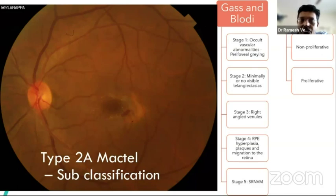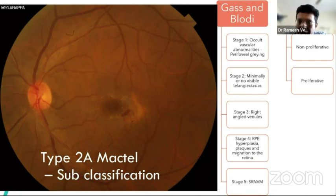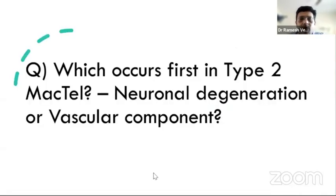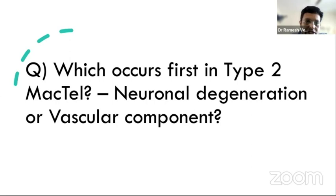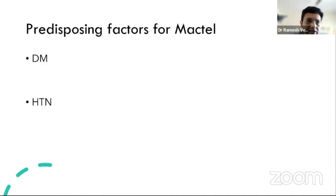Yannuzzi simplified this by noting that occlusive MacTel is very rare, proposing just type 1 and type 2. Gass and Blodi classified type 2 into five stages: stage 1 perifoveal graying with minimal visible telangiectatic vessels, stage 2, stage 3 right-angle venules, stage 4 pigment hyperplasia and plaques, and stage 5 neovascular membrane. There is ongoing debate about whether neurodegeneration or vascular lesions occur first in MacTel.